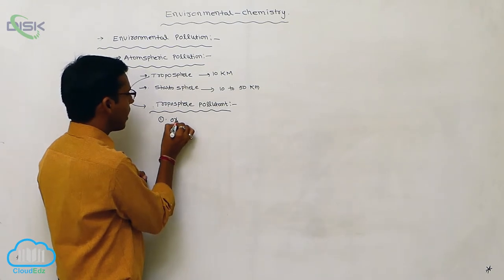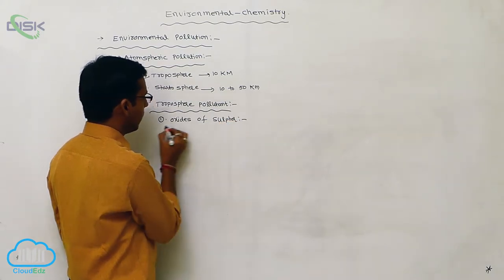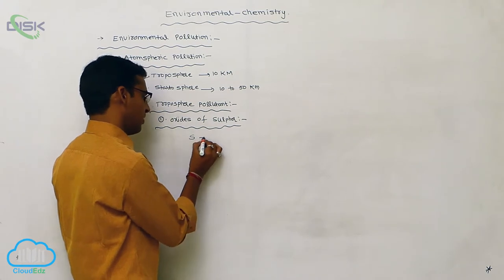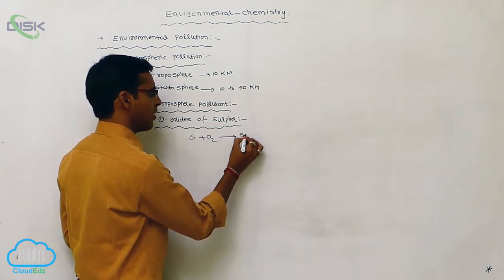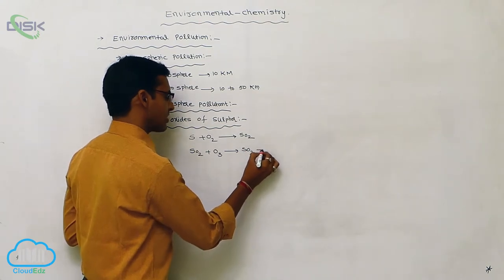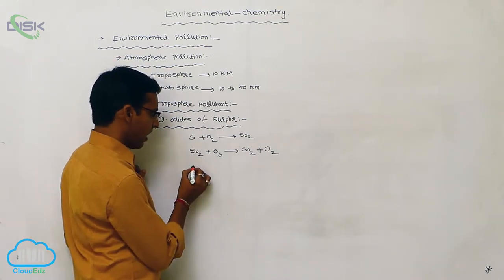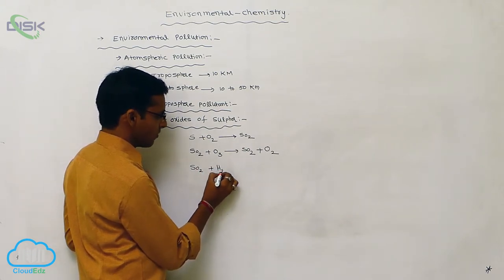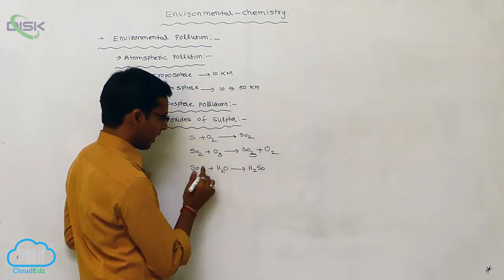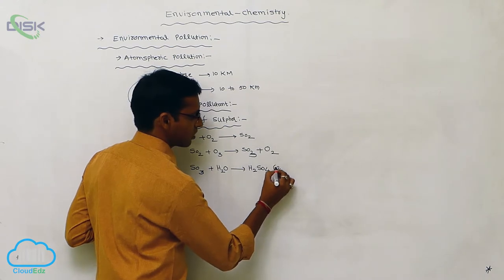The first troposphere pollutant is oxides of sulfur. Sulfur reacts with oxygen to form sulfur dioxide (SO₂). This sulfur dioxide reacts with ozone to form sulfur trioxide (SO₃). When sulfur trioxide dissolves in water, it forms sulfuric acid (H₂SO₄), which acts as an aqueous solution.